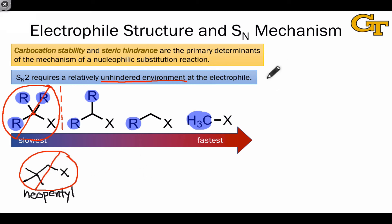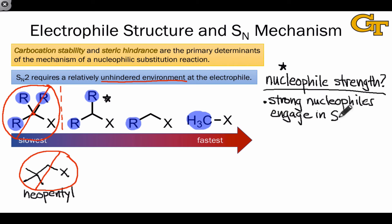One last thing worth mentioning concerns the strength and structure of the nucleophile and how this plays into whether SN1 or SN2 occurs. And this is especially important in reactions of secondary substrates as we've seen that these can react either through the SN1 or SN2 mechanisms. Strong nucleophiles, which tend to be anionic and strong bases, engage in the SN2 reaction.